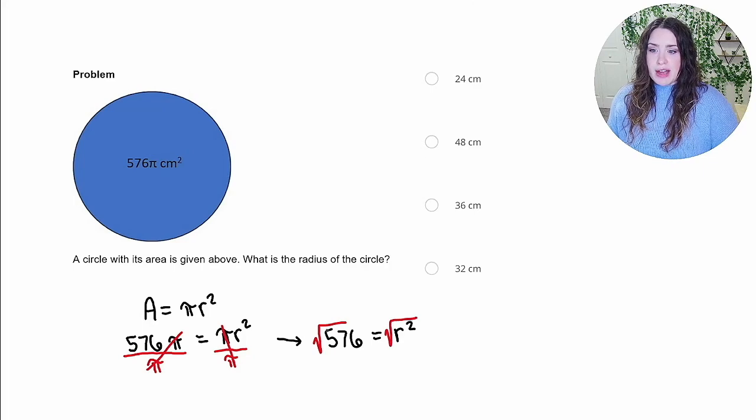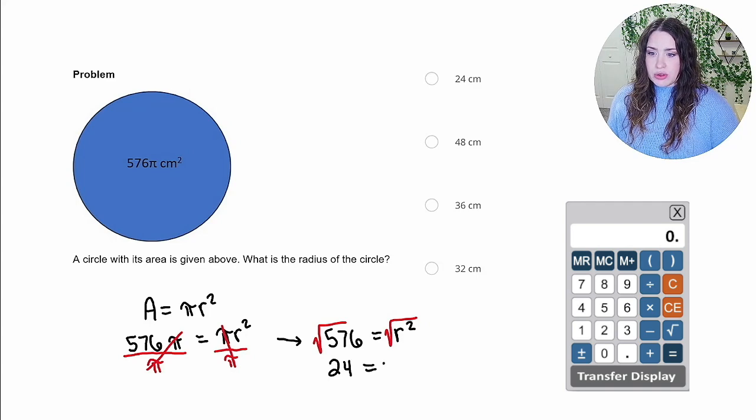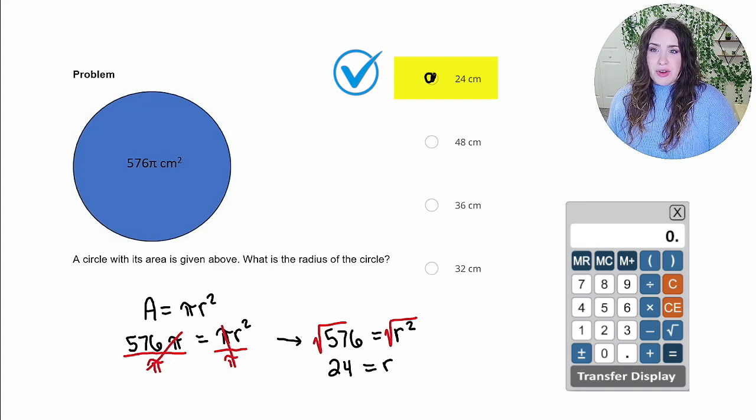So we're really going to find the square root of 576. When you use a calculator, you're going to get 24 is equal to r, which is our radius. So our radius is 24 centimeters.